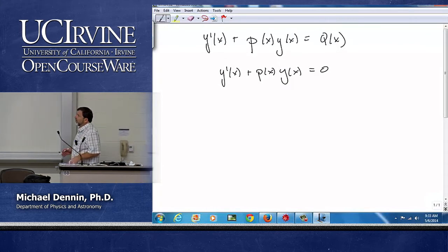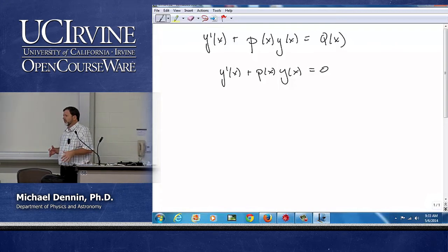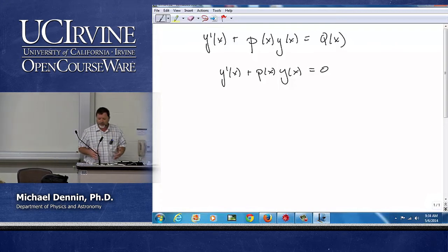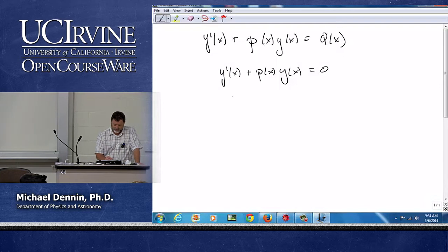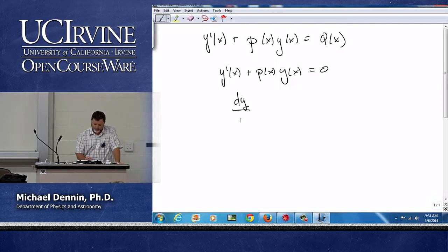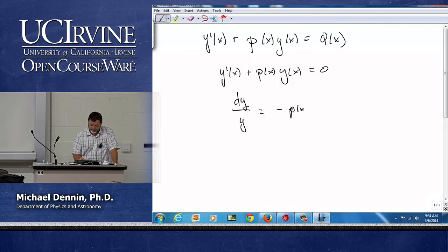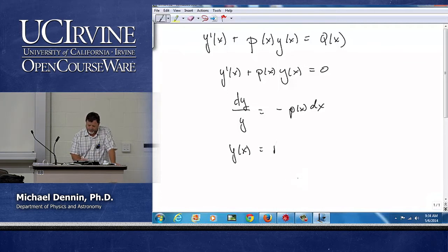This is pretty straightforward because it's one we can just directly integrate. That p of x doesn't really mess anything up for us because I can write this as dy over y equals minus p of x dx, and I'm done. Assuming I can compute the integral of p of x, y of x just equals some constant e to the minus integral of p of x dx.